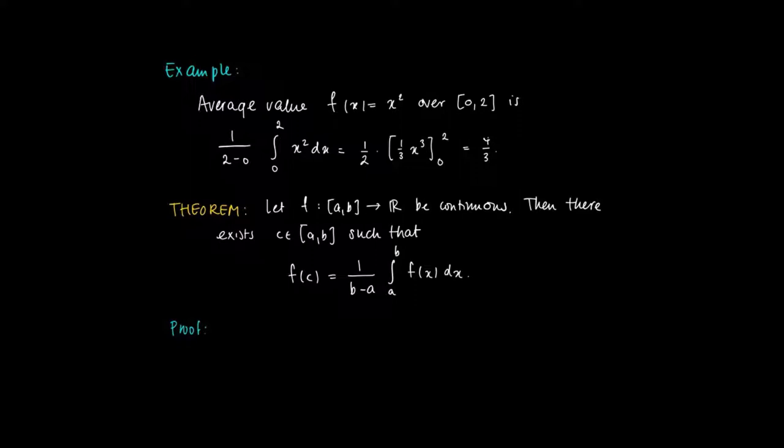The proof goes as follows: f is continuous, so we know by virtue of the fundamental theorem of calculus that we have a primitive of f on [a, b]. We'll call this capital F.